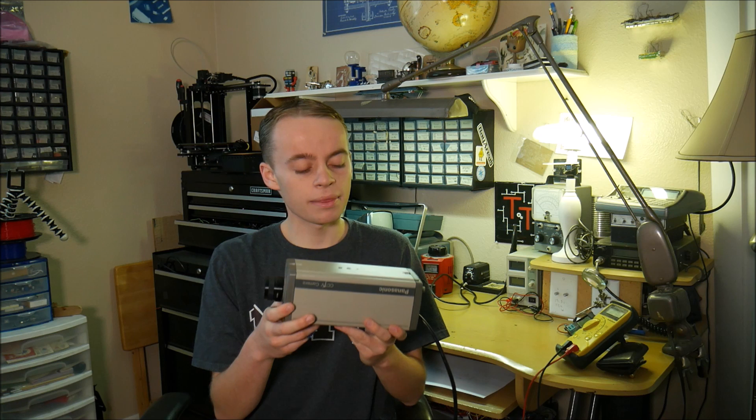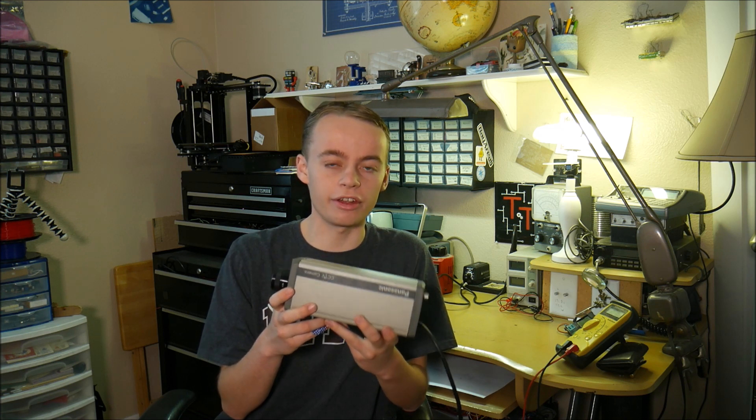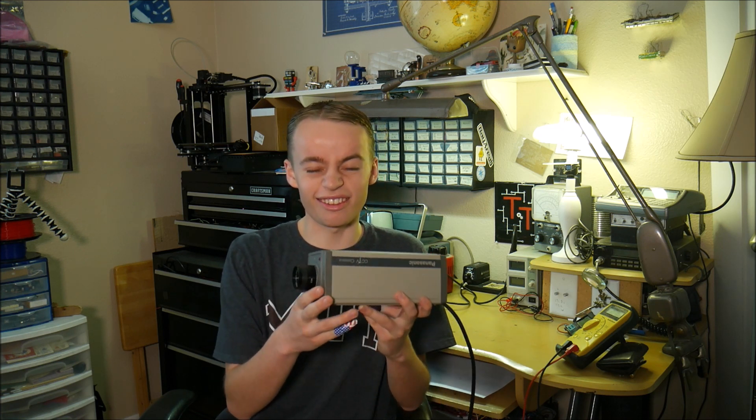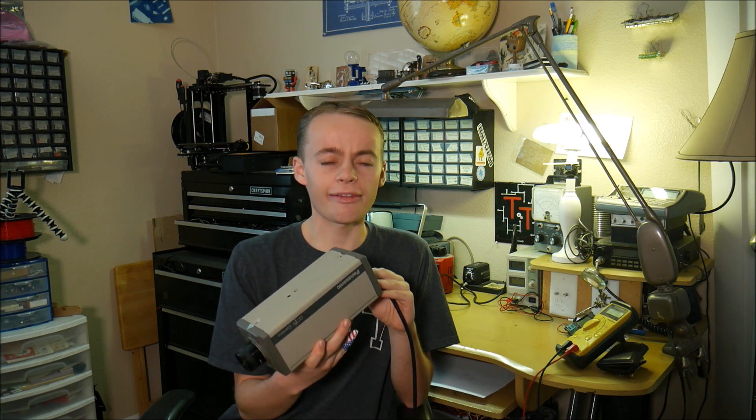Today we're going to be exploring how something called a Vidicon tube, which is similar to a CRT, was actually able to record video and how it was used in these old cameras. We're going to be taking apart this camera and seeing how that all works. But before we get into the video, here's a quick update.